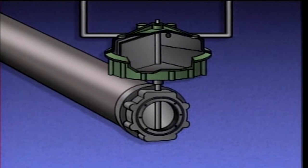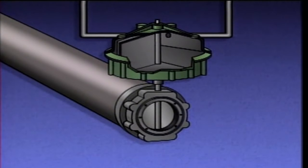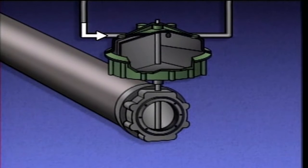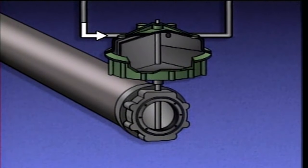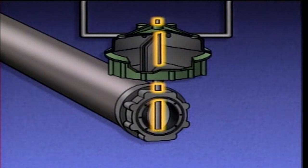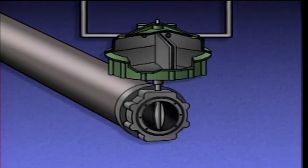In a cutaway of a vane actuator operating a butterfly valve, when air pressure is supplied through the air supply port, it pushes against a vane, causing the vane to swing across a housing. This turns a shaft, and as the shaft turns, it opens the valve.